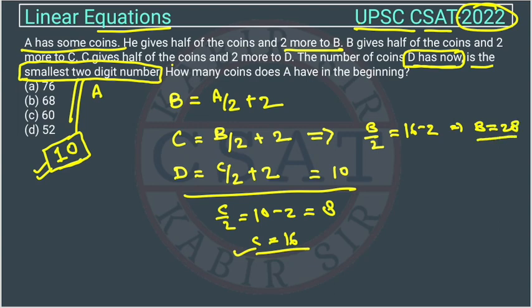If B is 28 from here, we can calculate A. So it is 28 minus 2 is equal to A by 2. So this will be how much? This will become A is equal to 2 into 26, so this will be 52.